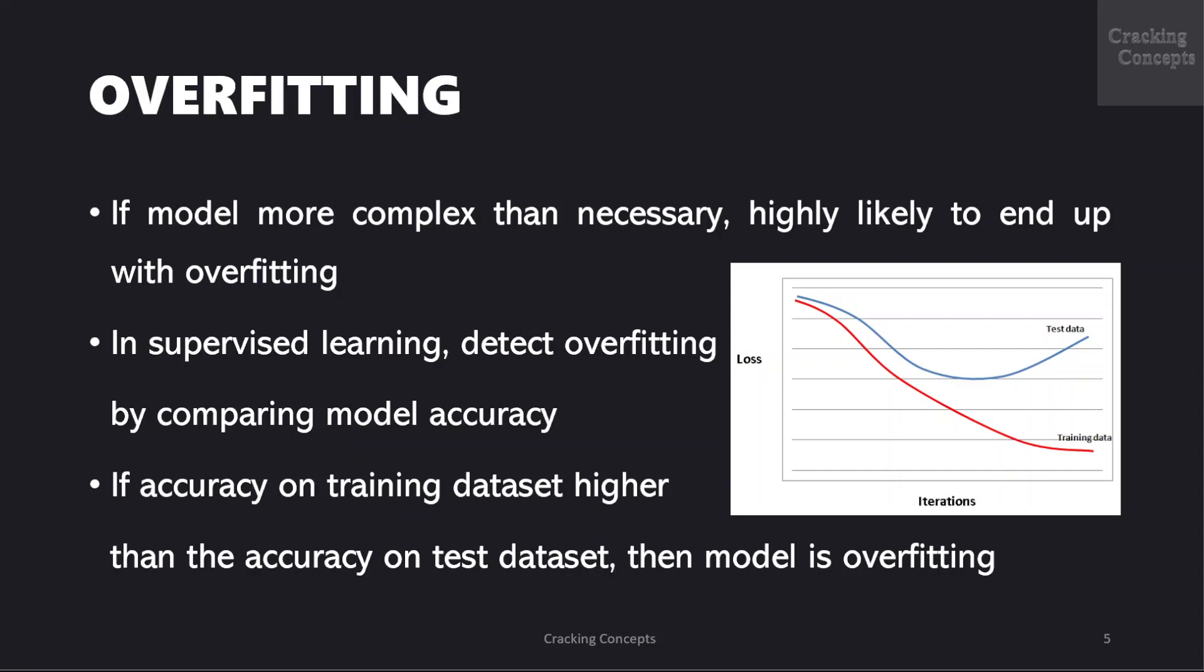In a supervised learning task, we can detect overfitting by comparing the model accuracy on training and testing data set. If the accuracy on training data set, the observations that the model sees, is much higher than the accuracy on test data set, the unseen observations, then the model is overfitting.